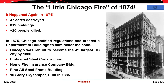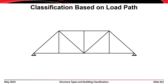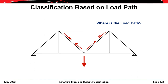Another way of classifying structures is based on the load path. Consider a truss subjected to a point load in the middle panel acting downward. Tracing the load from its point of application to the foundations: the load travels through diagonal members in tension, then acts in compression down through the end posts to the foundation. From statics, equilibrium requires tension in the bottom chord members to counteract the compression above.